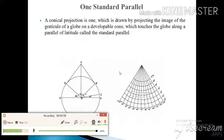What is one standard parallel? A conical projection is one which is drawn by projecting the image of the graticule of a globe on a developing cone, which touches the globe along a parallel of latitude, called the standard parallel.